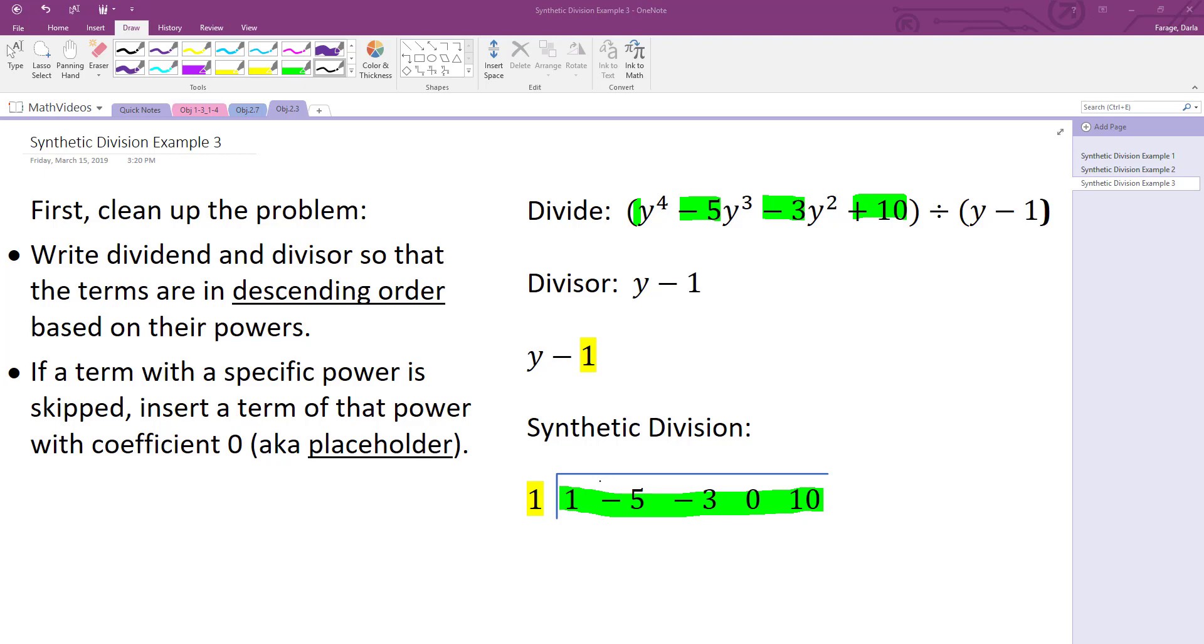And then I also have listed the coefficients of our degree 4 polynomial, which is our dividend. Note that y to the 4th is 1y to the 4th, so hence the coefficient of 1. And then note that we're also missing a degree 1 term. So in that case the coefficient for that degree 1 term is 0. We need to make sure we account for that when we list our coefficients there in the dividend position. So you can see that 1, negative 5, negative 3, 0, 10 are my coefficients.